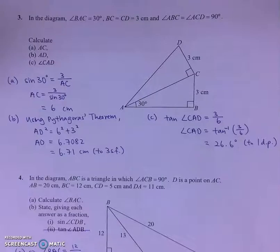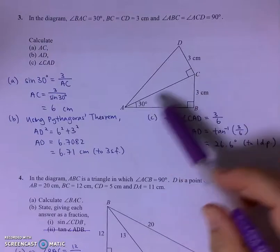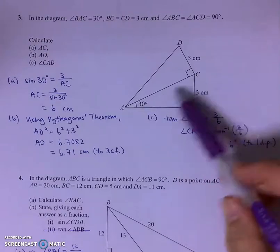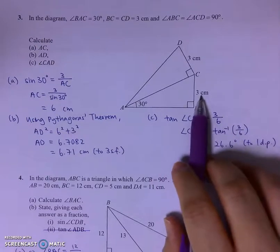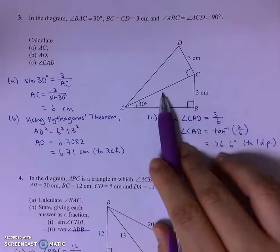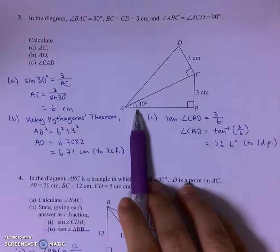For question number 3, to find the length of AC, I'll make use of the information I know from triangle ABC. I have the length of the opposite, I want to find the length of the hypotenuse, so I will need to use sine of the angle given, 30.